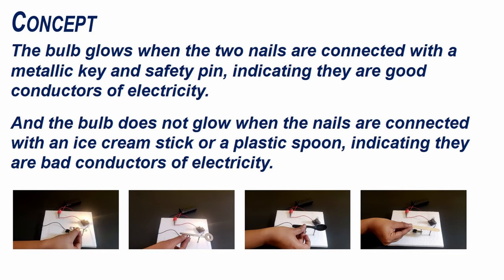The bulb glows when the two nails are connected with a metallic key and safety pin indicating they are good conductors of electricity. And the bulb does not glow when the nails are connected with an ice cream stick or a plastic spoon indicating they are bad conductors of electricity.